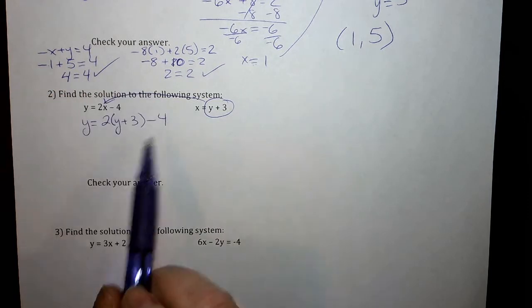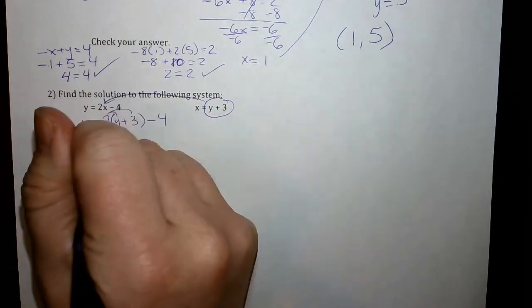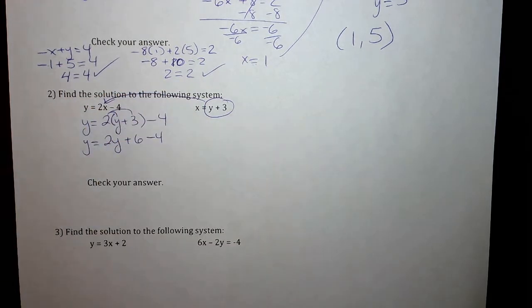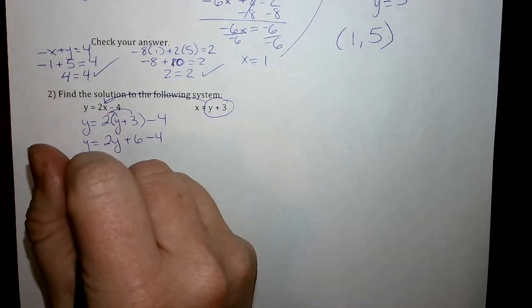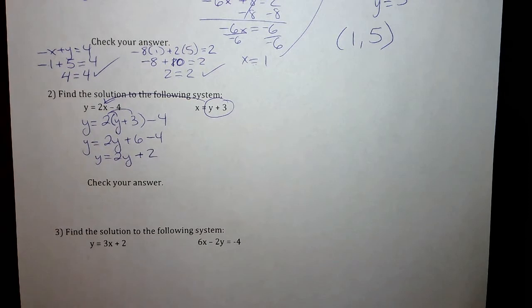Now I'm going to go ahead and solve. Now I'm down to only one variable, y. And so I'm going to solve that. So I get y equals 2y plus 6 minus 4. I can combine my like terms. So we get plus 2.